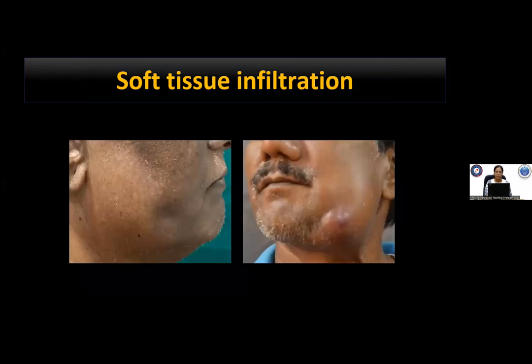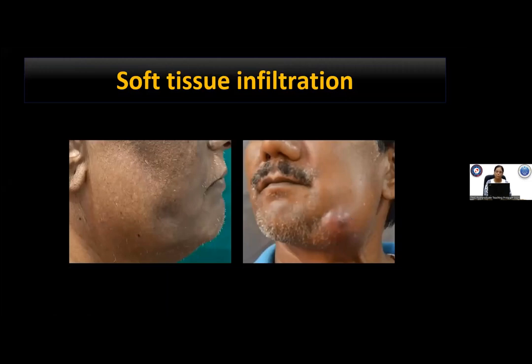Another important factor to consider is deep soft tissue infiltration. This can present as involvement of the overlying skin, diffuse edema over the skin with poorly defined margins, or trismus due to infiltration of the infratemporal fossa. These four points — intraoral disease assessment, skin involvement, paramandibular disease, and deep soft tissue infiltration — must be considered while planning the tumor resection.